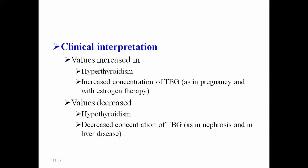Clinically, total thyroid hormone values are increased in hyperthyroidism and during increased concentrations of thyroid binding globulin, seen in pregnancy and with estrogen therapy. Values decrease in hypothyroidism and with decreased TBG concentrations — generally seen in nephrotic syndrome (where excess protein is lost) and in liver disease (where biosynthesis of plasma proteins is diminished).